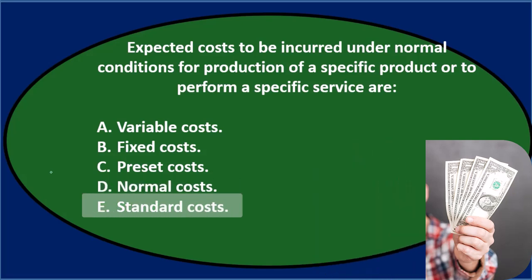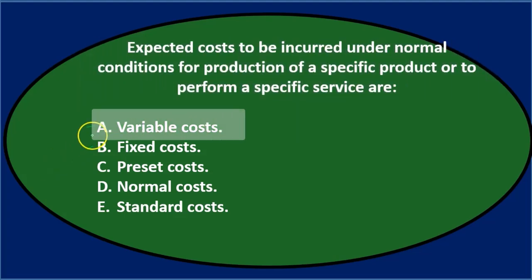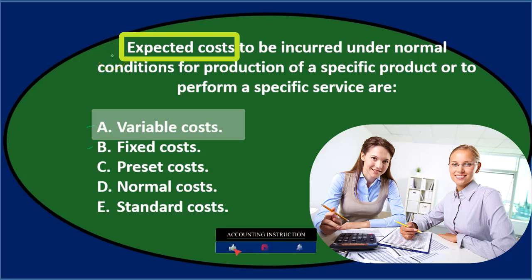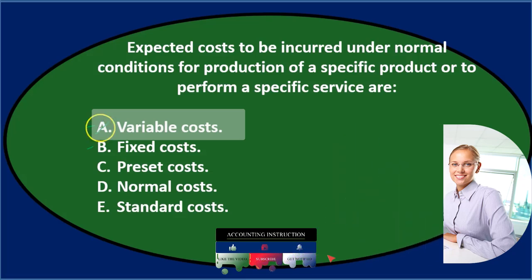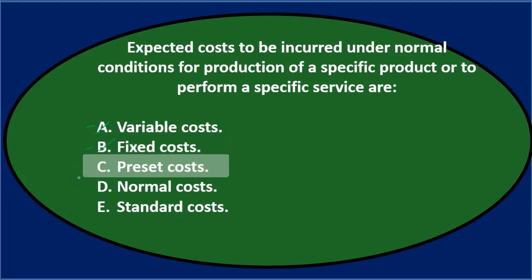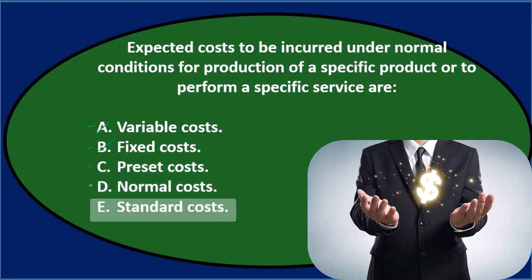Let's go through this using process of elimination. Variable costs are those that change as production levels change — that's not what we're looking for here. We're looking at expected costs, something like budgeted costs, so it's not variable costs. Fixed costs stay the same, and again that's about cost behavior, not expectations — so that's out too. Preset costs sounds closer. Normal costs also sounds like it could apply. Standard costs sounds similar as well. Preset, normal, standard — they all sound like the same type of thing, so we'll keep C, D, and E.